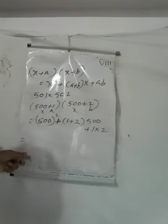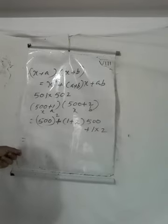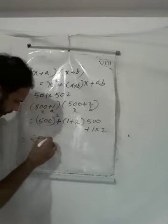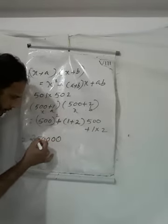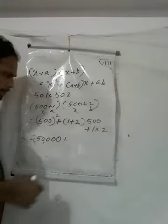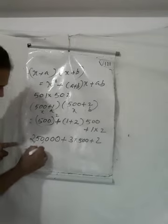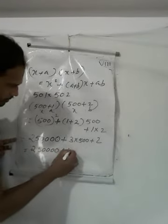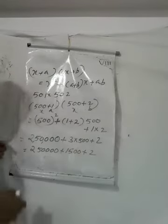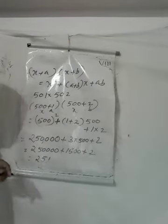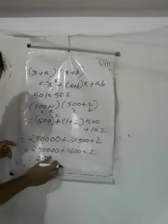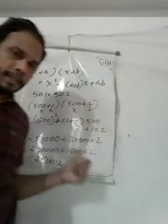Here X equals 500, A equals 1, B equals 2. So we get 500 square, plus A plus B which is 1 plus 2 equals 3, into 500, plus A times B which is 1 into 2 equals 2. 500 square is 2,50,000. Plus 1,500, plus 2 gives us 2,51,502.